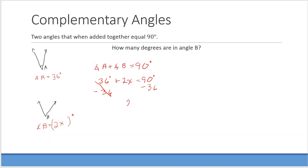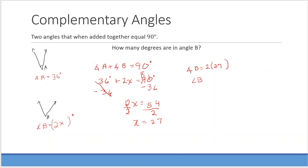After subtracting 36, I have 2x equals 54. Dividing both sides by 2: x equals 27. But angle B is equal to 2 times x, so angle B equals 2 times 27, which is 54 degrees. Adding angle B (54°) and angle A (36°) gives 90 degrees, confirming the answer.